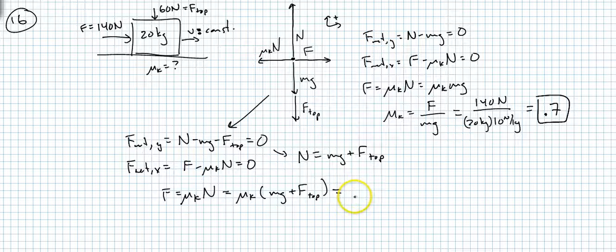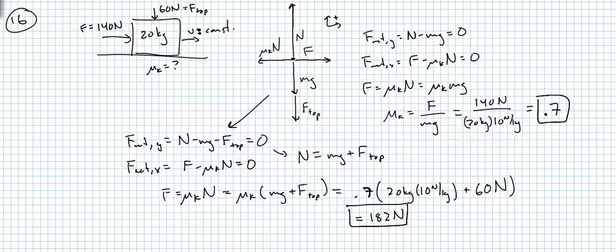So that's .7 times 20 kilograms, 10 newtons per kilogram. That's MG plus an extra 60 newtons. And that will be 182 newtons. So bigger than the 140 newtons you needed to push with before.